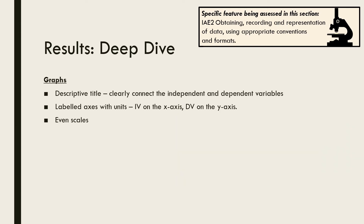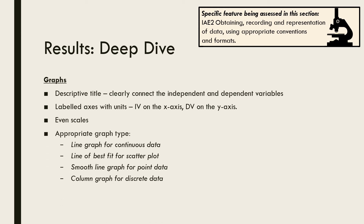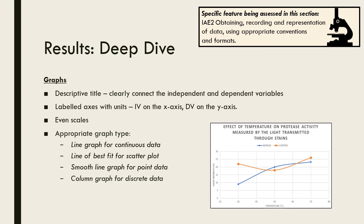Graphs need to have a descriptive title that clearly connects the independent and dependent variables. The reader should be able to understand what they are seeing in your graph without having to read other sections of the report — a vague title such as 'enzyme practical' is inadequate. Plot the independent variable on the x-axis with the dependent variable on the y-axis. Ensure that both axes have even scales and are appropriately labelled, including units in brackets. Make sure you are using the appropriate graph type — generally this will be a line graph. Be careful when graphing in Excel as often the default settings, including scales and plot type, will be incorrect.